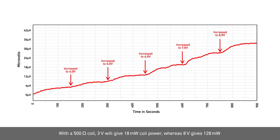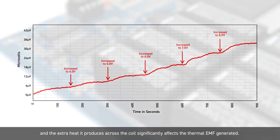With a 500 ohm coil, 3 volts will give 18 milliwatts of coil power, whereas 8 volts gives 128 milliwatts. The extra heat produced across the coil significantly affects the thermal EMF generated.